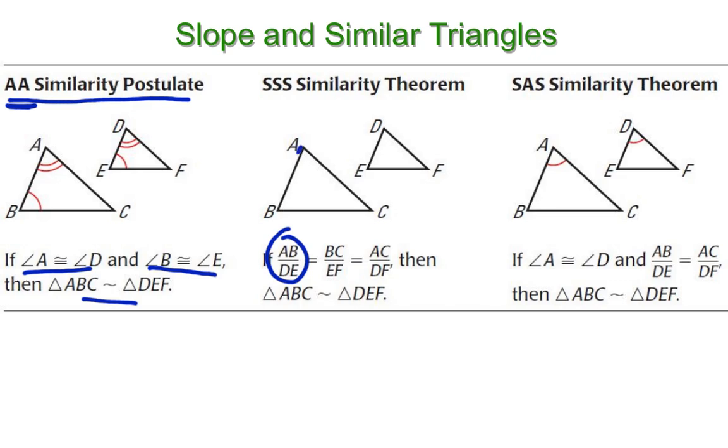so the ratio of side AB with its corresponding side in the other triangle to DE, if that ratio is the same ratio as BC is to EF, is the same ratio as AC to DF, if all three of those corresponding sides form the same ratio, then I know that the triangles are similar.